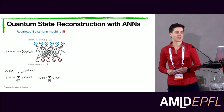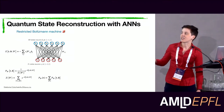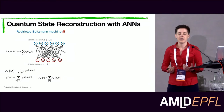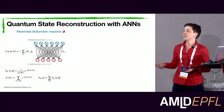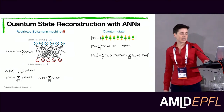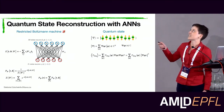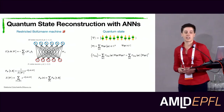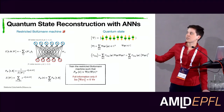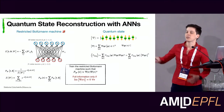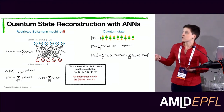There exists a very efficient way to train the RBM to encode a target probability distribution over visible neuron configurations, and also a very efficient way to draw samples from this distribution. This is exactly what we want for quantum state reconstruction: we train our RBM so that the visible-neuron probability distribution approximates the squared wave function amplitude, identifying each visible neuron with one qubit.